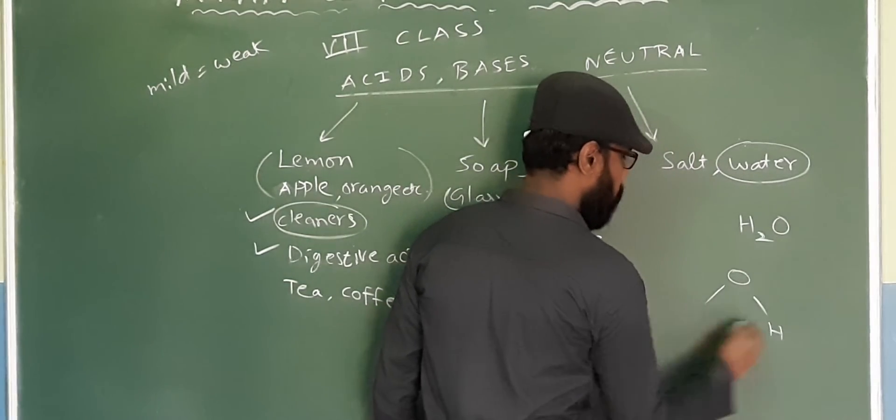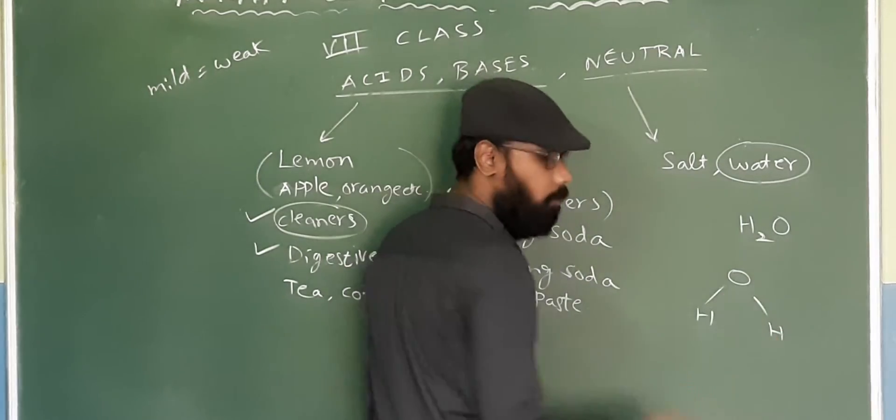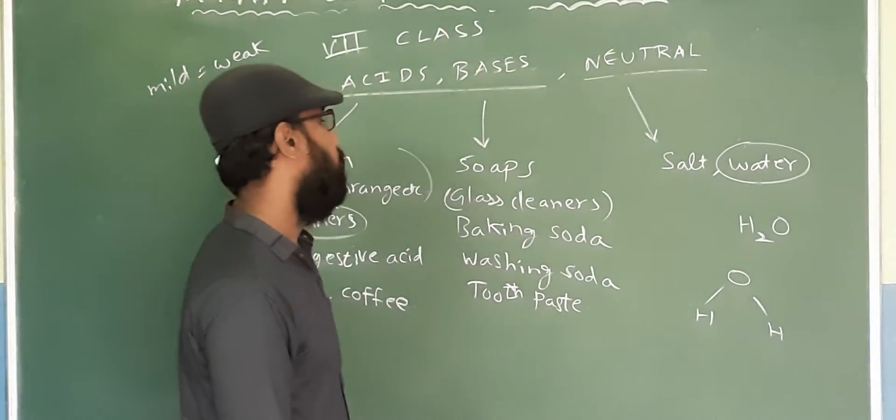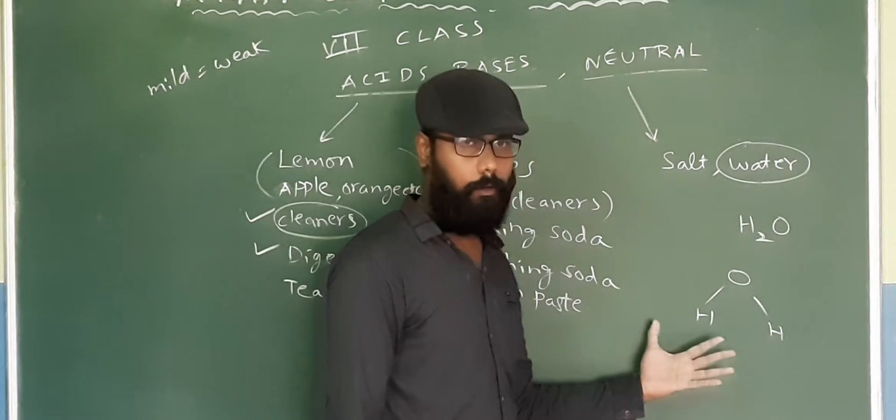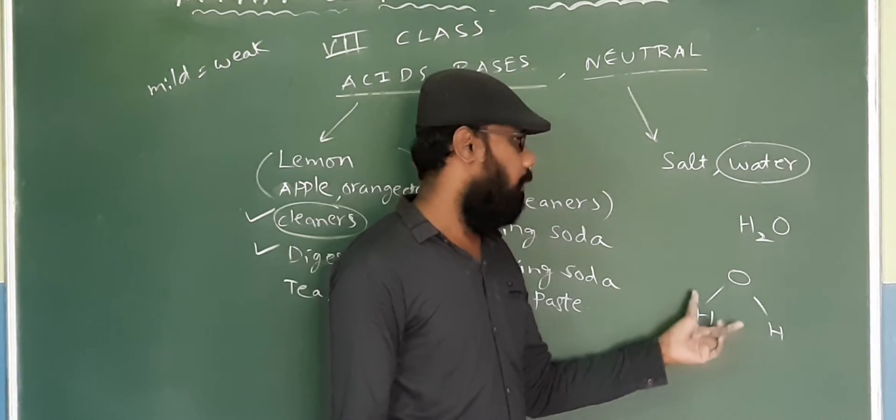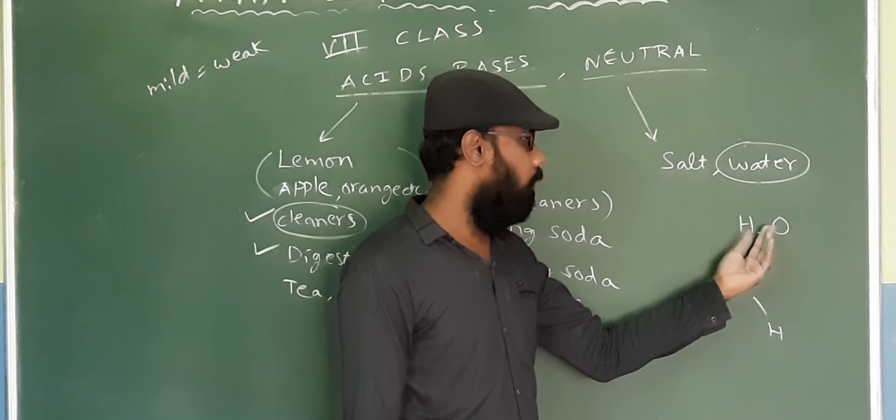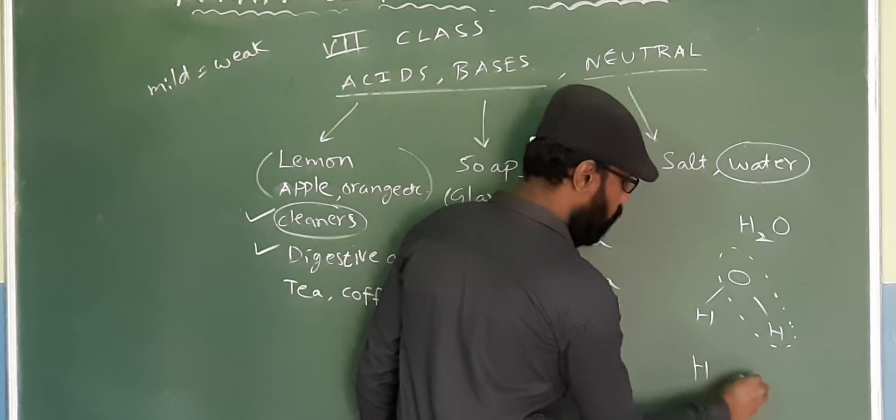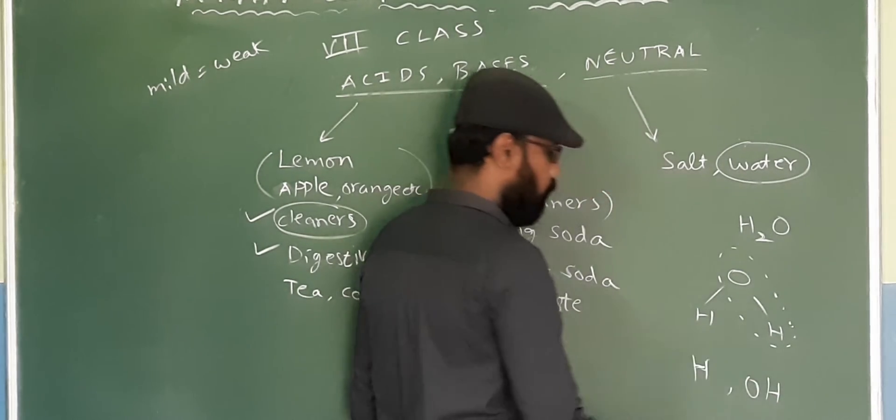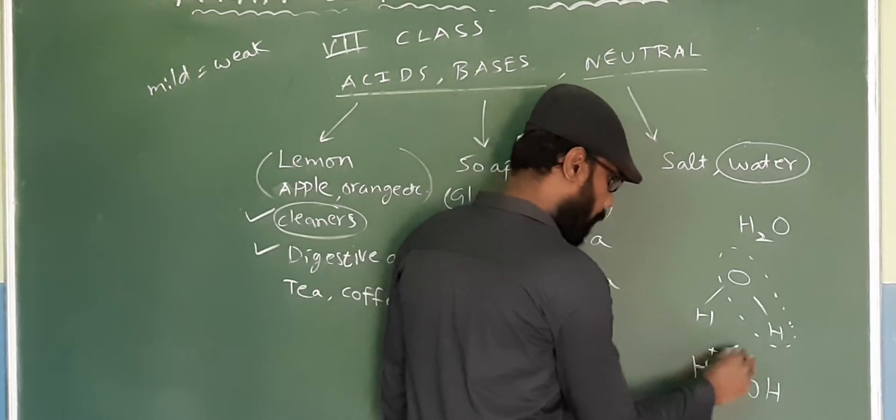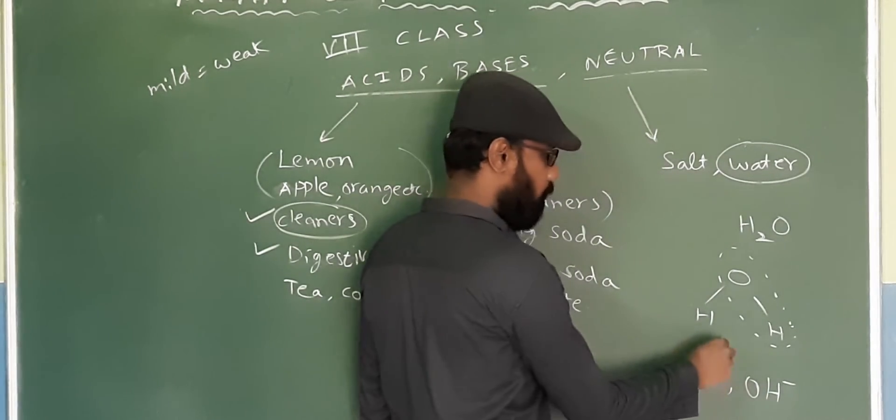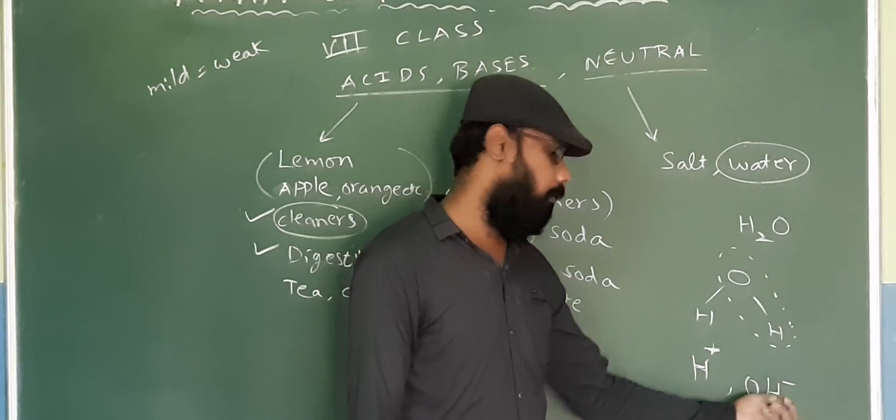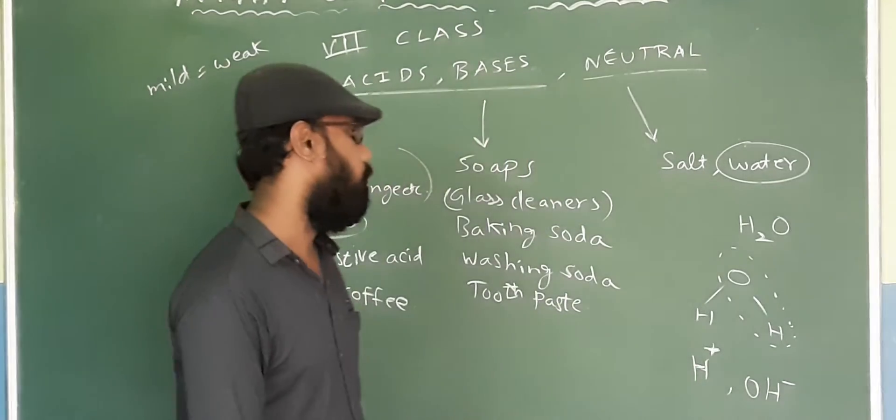When you try to break the water molecule - we are not breaking it, but in some chemical processes, the water molecule can break into two parts. Then it will break like this: H+ and OH-. We will write plus and minus here. Just remember that the water molecule can break into two parts: H+ and OH-.